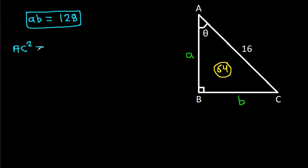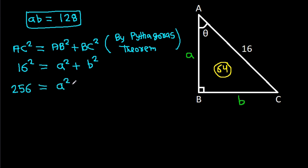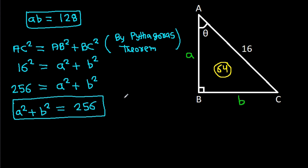By the Pythagorean theorem, AC squared equals AB squared plus BC squared. Since AC is 16, we have 16 squared equals A squared plus B squared, so 256 equals A squared plus B squared. We now have A squared plus B squared equals 256, and AB equals 128.